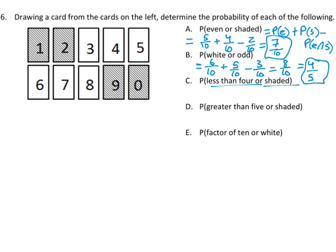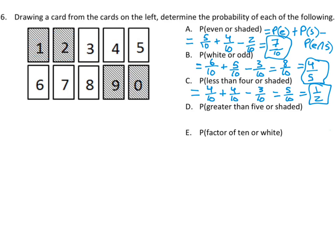Let's go through the rest of these — I'll give you a moment to try them out, then check how you did. Probability of less than four or shaded: the numbers less than four include four cards, so that's 4/10. The probability of shaded — there are four shaded cards, so that's 4/10 as well. The probability of less than four and shaded — three of those cards satisfy both — so we subtract 3/10. That gives you 5/10, which is one half.